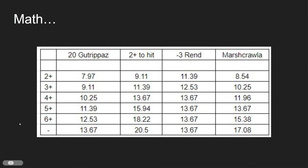So the reason that Marshcrawler is bad is because of math. So here we have a table of Gutrippas, and this is including just a regular Gutrippas unit without any buffs, without all-out attack, without poisons, without elixirs, without any of those things. So against a 4-up save, 20 Gutrippas - and this is of course a reinforced unit because this is where we're going to see the greatest effects of Hoarfrost - are going to deal about 10.25 damage. So not great, not a great amount of damage output.